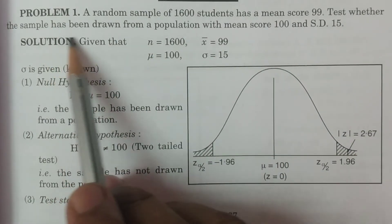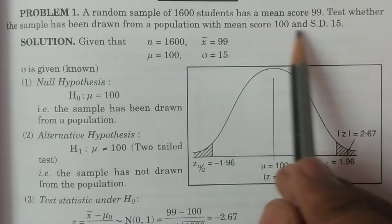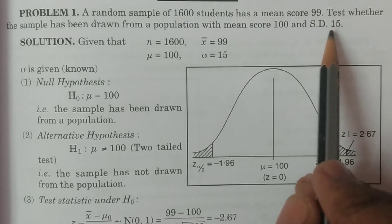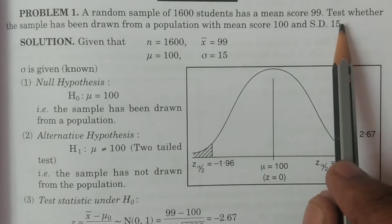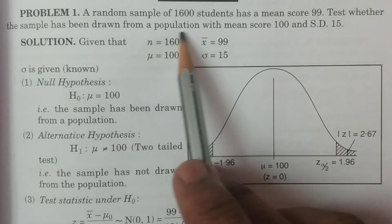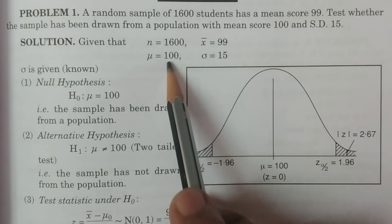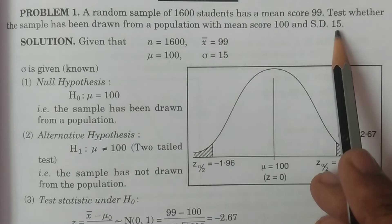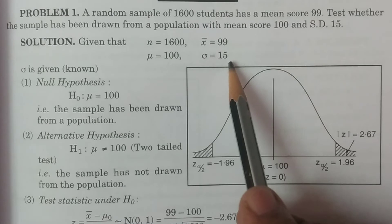Test whether the sample has been drawn from a population with mean score 100 and standard deviation 15. That is, mu naught is equal to 100 and sigma is equal to 15. This is a case when sigma is known.